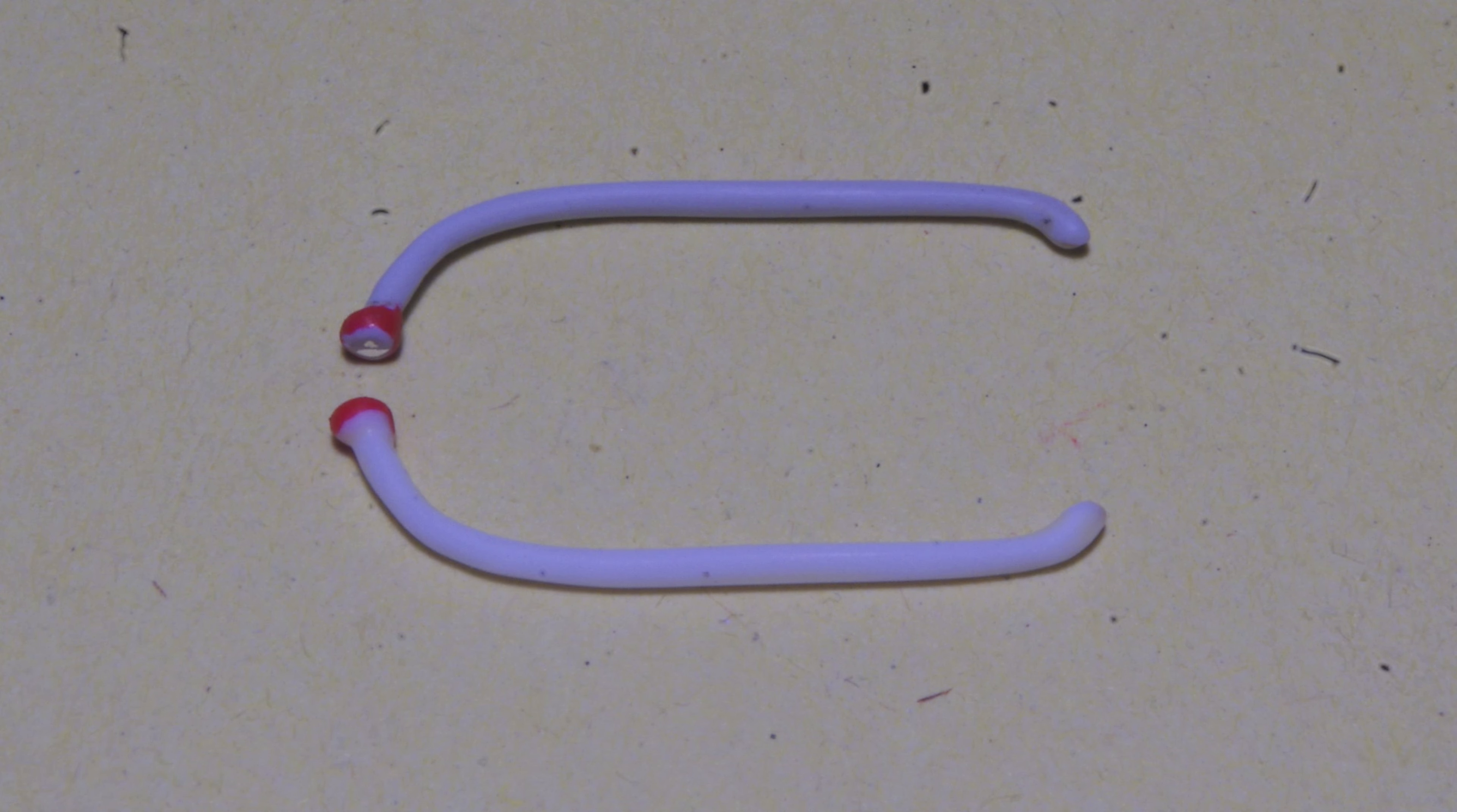After the kit grab handles are de-chromed and cleaned up, cut off the oversized round ends, which are highlighted in red here.